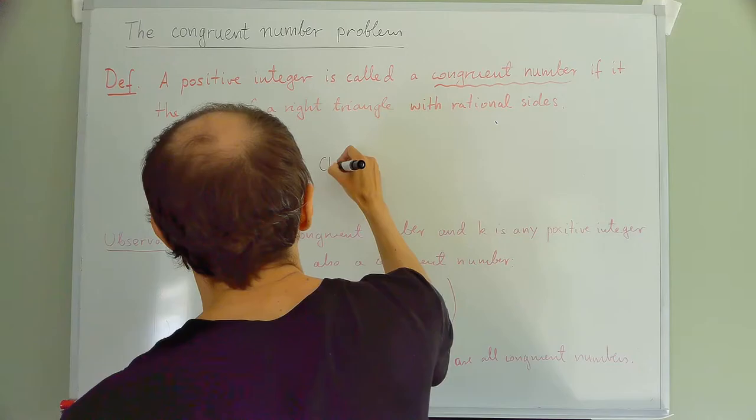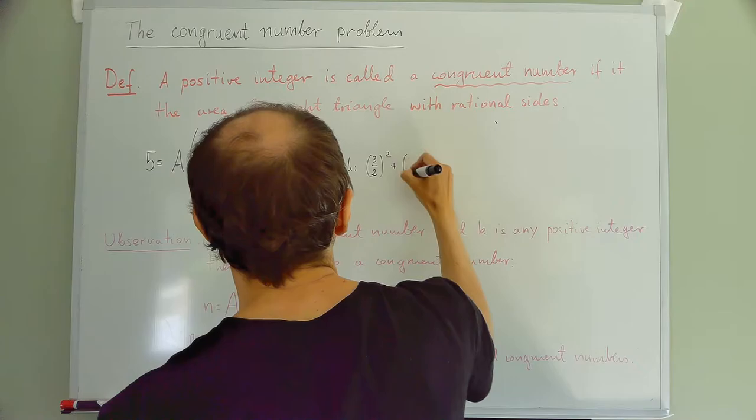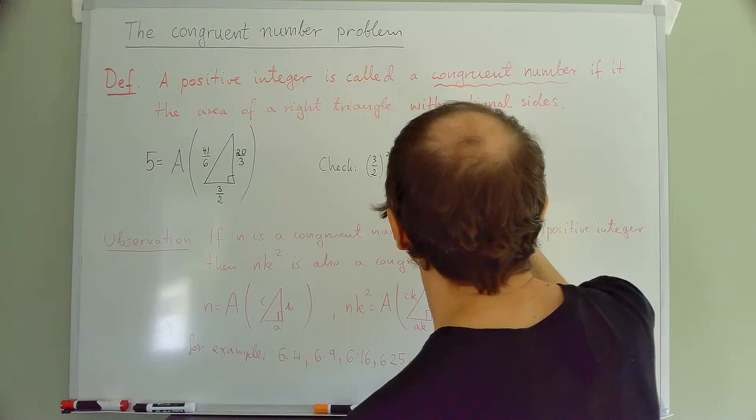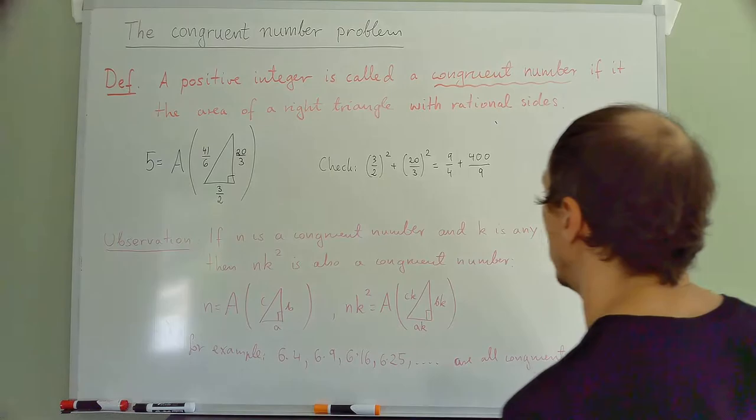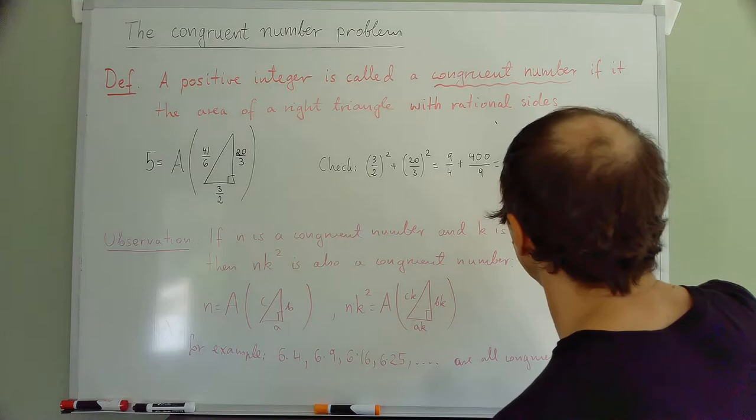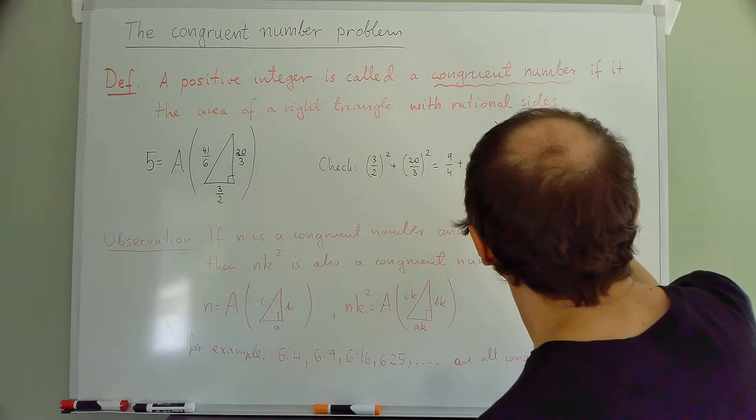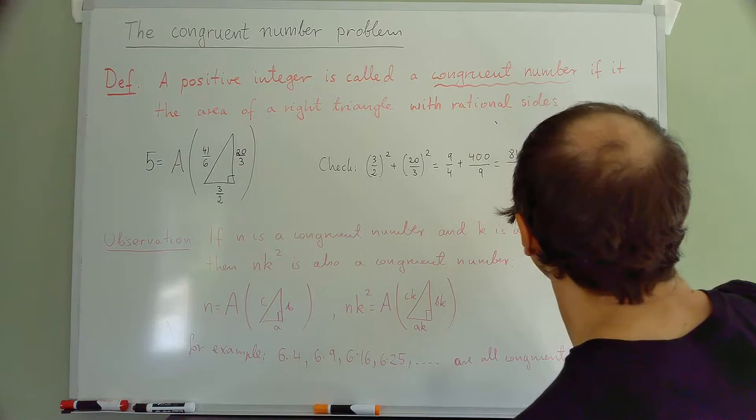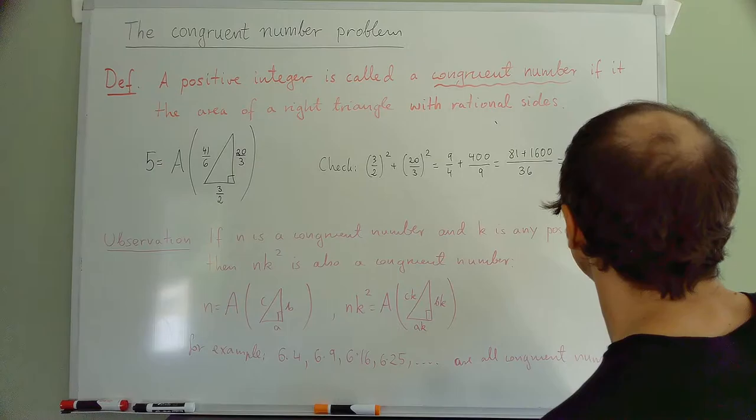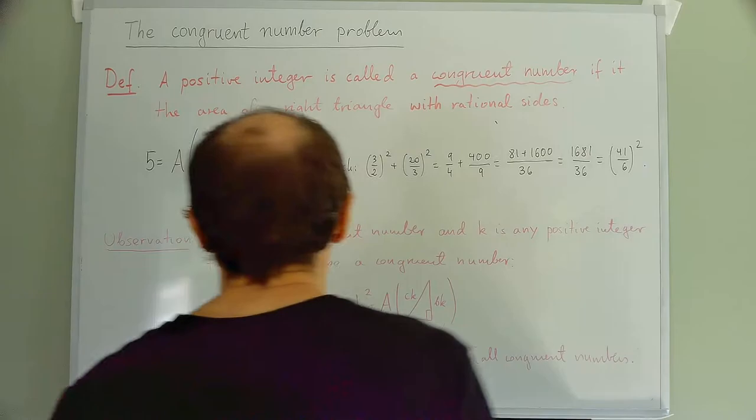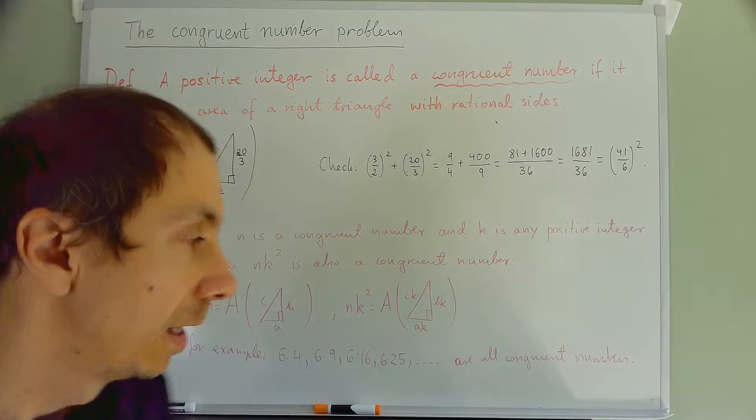Let's make sure that this is actually a right triangle. So let's check: (3/2)² + (20/3)² equals 9/4 + 400/9. Common denominator 36, so we get 81 + 1600, which is 1681/36. And it is indeed (41/6)². So this is really a right triangle, and 5 is another example of a congruent number.